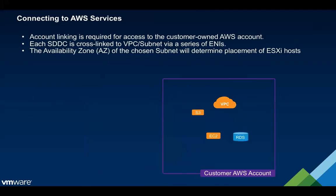Now let's discuss how we tie these SDDCs into Amazon services. The SDDCs are provisioned within an org in the VMware Cloud service. These orgs are associated with Amazon accounts owned by VMware, so the SDDCs reside in a VMware-owned Amazon account, and we connect them into your Amazon account. Let's walk through what that looks like within the context of deploying an SDDC.